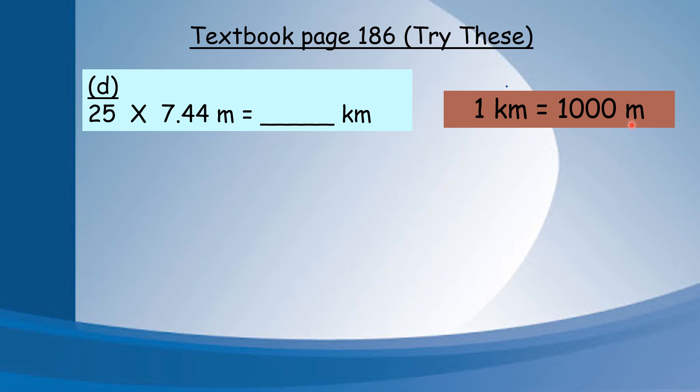If I want to convert from m to km, I need to divide. If I divide by 1000, then I will move the decimal point 3 steps to the left. If I convert the unit first, I will get a long answer: 0.00744. You will find it difficult to calculate later. So for this one, I don't want to convert first. I want to multiply first. After getting the answer, then I convert to km.